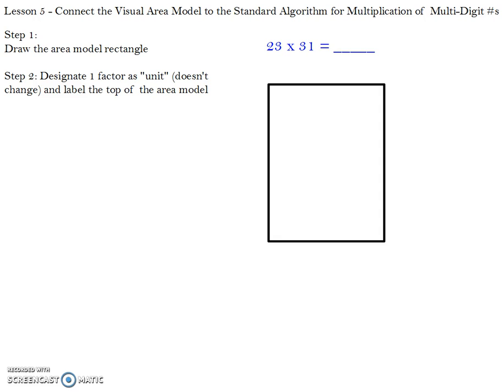Step two is you want to designate one of the factors in the problem as the unit. This means that that number is not going to change. You want to think about designating your number as which one is going to be easier or harder to use. I usually like to choose the harder to use number or the harder to pull out tens number as a designated number. I'm going to use 23 as my designated number. So at the top of my area model, I'm going to write 23.